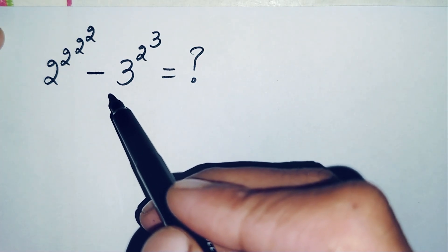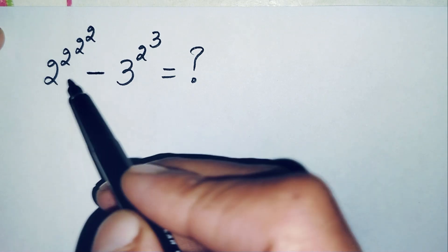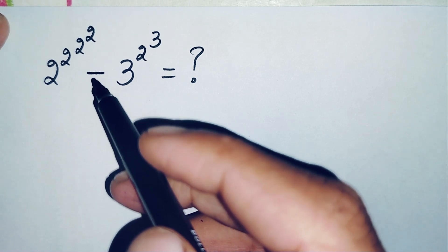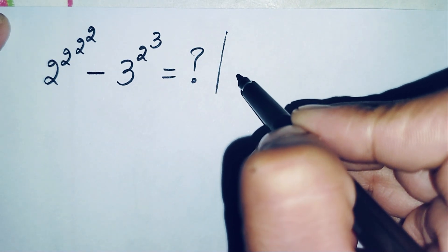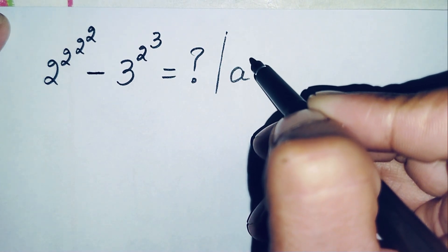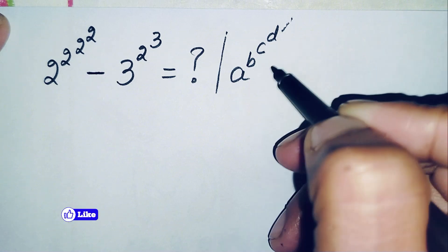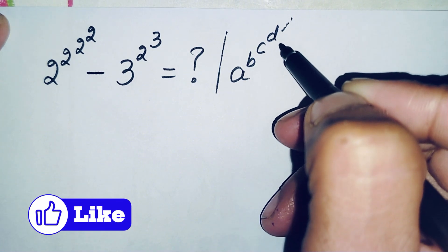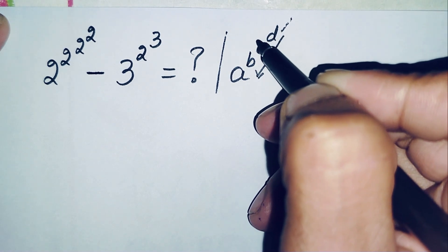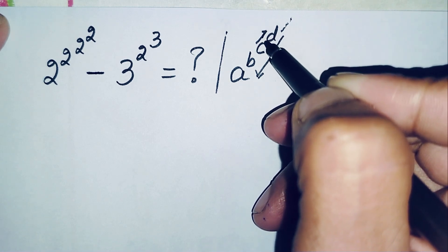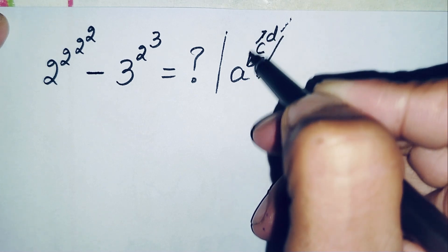How can we solve a math problem like this having one base and more than one power? When we have a number in this form, raised to power b raised to power c raised to power d and so on, there are some specific exponential rules. According to this rule, we will solve the powers from top to bottom — first solving c raised to power d, then b raised to that result, and so on downward.